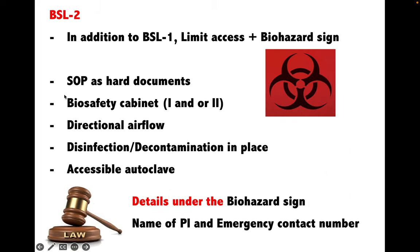In addition to BSL 1, BSL 2 must have limited access, clearly displayed biohazard symbols, on-site documentation of standard operating procedures or SOP, and biosafety cabinet class 1 and/or class 2. The ventilation must be directional — air coming in and out of the laboratory must be controlled in only one direction. There must be a designated place for decontamination, an autoclave in an accessible area, and emergency contact details and the head of the laboratory must be displayed under the biohazard symbol.